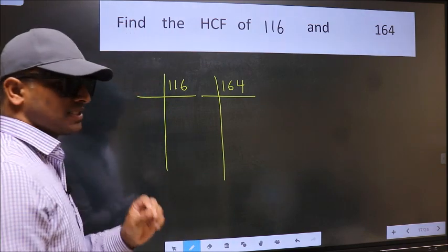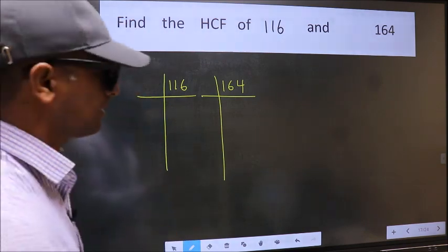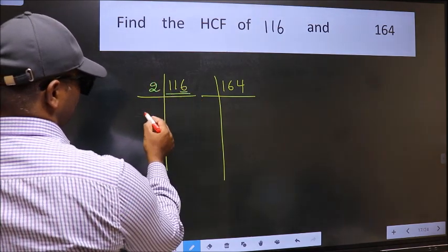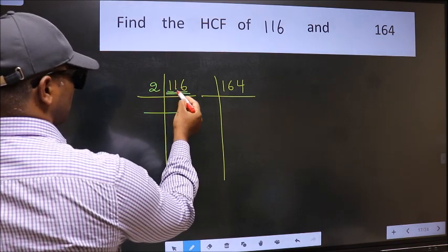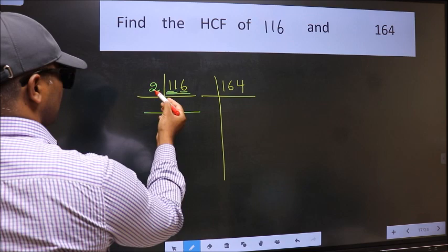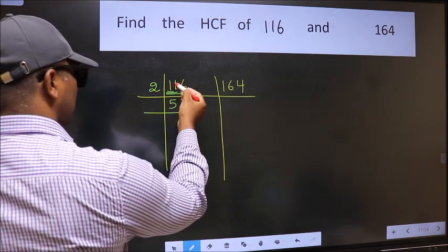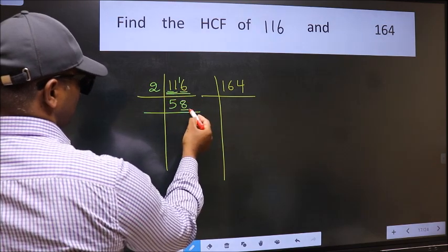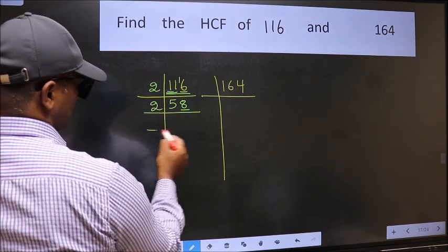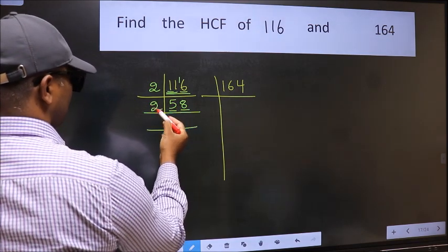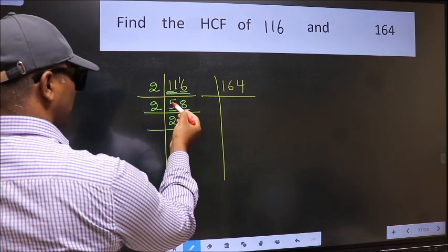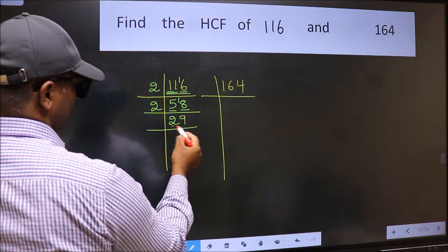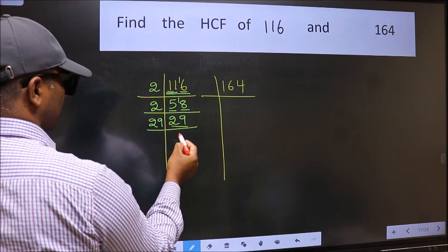For 116: the last digit is 6, which is even, so take 2. 116 divided by 2 — a number close to 11 in the 2 table is 10, so 11 minus 10 is 1, carry forward — gives 58. 58 divided by 2 gives 29. 29 is a prime number, so 29 once is 29. Therefore 116 = 2 × 2 × 29.